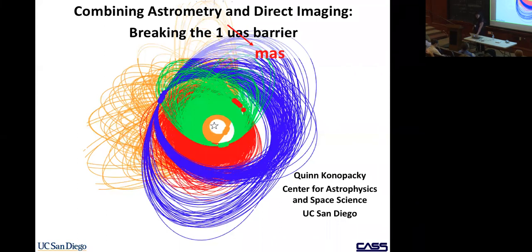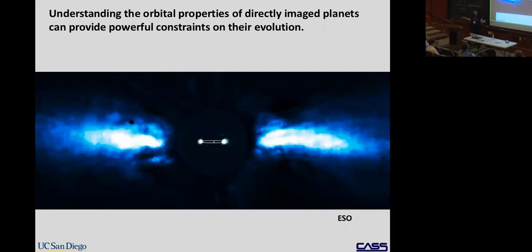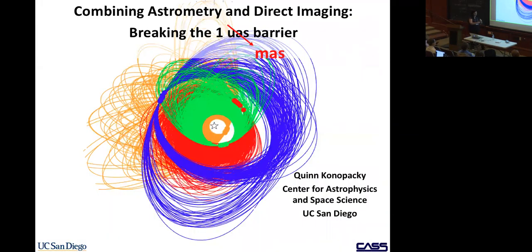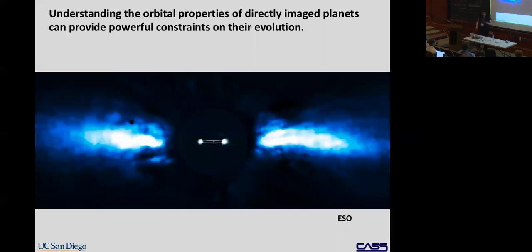First I'll give motivation for why we care about precise astrometry for direct imaging. The point is primarily to use orbital information to say something about the evolution of directly imaged planets. This is a press release picture of the beta Pictoris system, which I'm going to talk about a lot because there's a lot of interesting information we've gotten from its orbit.